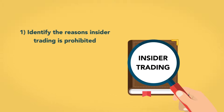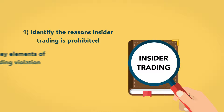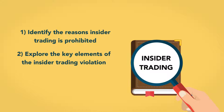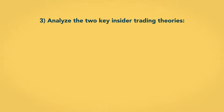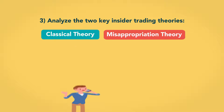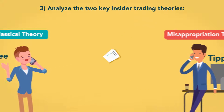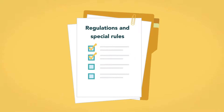First, we'll identify the reasons insider trading is prohibited. Second, we'll explore the key elements of the insider trading violation. Third, we will analyze the two key insider trading theories — the classical theory and the misappropriation theory — and look at liability of both the tipper and tippee. Finally, we will identify regulations and special rules that help prevent insider trading.